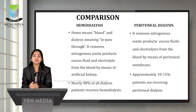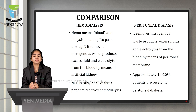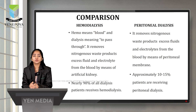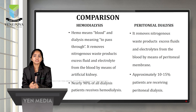Comparing hemodialysis and peritoneal dialysis: 'Hemo' means blood and 'dialysis' means to pass through. Hemodialysis removes nitrogenous waste products, excess fluid, and electrolytes from the blood by means of an artificial kidney. Nearly 90% of dialysis patients receive hemodialysis. Peritoneal dialysis removes nitrogenous waste products, excess fluid, and electrolytes from the body by means of the peritoneal membrane, and approximately 10 to 15% of patients receive peritoneal dialysis.